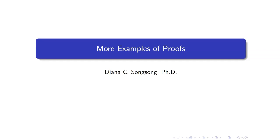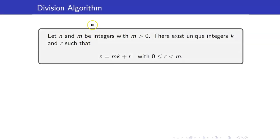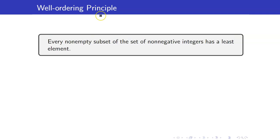In this lesson, we are going to discuss more examples of proofs. In particular, we will be discussing the proof of the division algorithm. We have already seen this theorem in our previous video lectures, except that I did not give you the proof of this one. In order to understand the proof of the division algorithm, we have to understand what the well-ordering principle is.